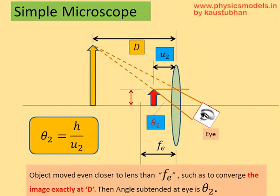So, we have to keep moving the arrow object till we get the image exactly at d. That means we can't see the image any taller than this. With this condition being met, the angle subtended by the object now is theta 2 is h by u2 and that's also the angle subtended by the image theta 2.